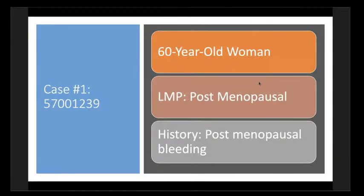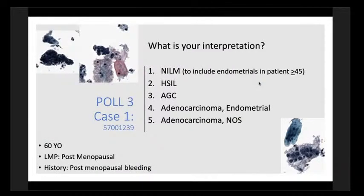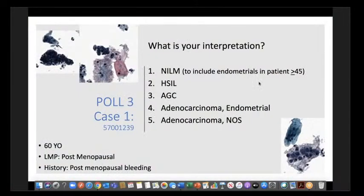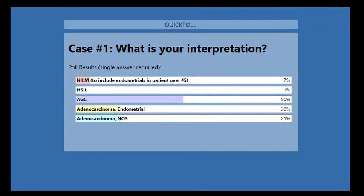Now we go to poll number three for case one. Based on the slides shown, what is your interpretation? Options are: NILM (including endometrial cells in a patient over 45), high-grade, atypical glandular cells, adenocarcinoma of endometrium, or not otherwise specified. Results: 50% of you thought atypical glandular cells, with some going all the way up to adenocarcinoma of endometrium, and about the same amount for adenocarcinoma not otherwise specified.